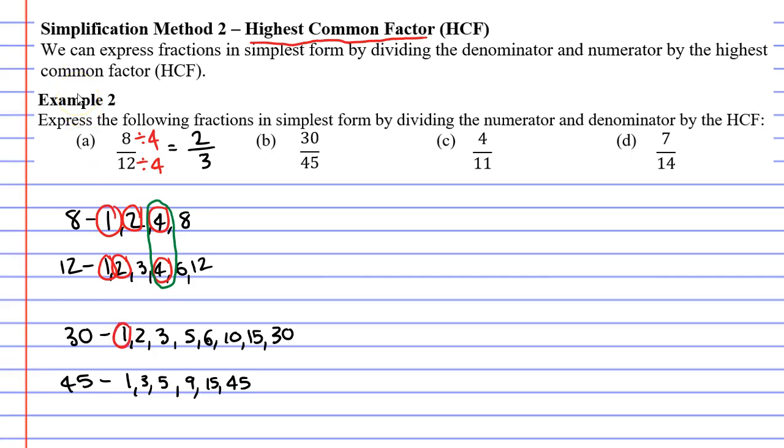So what factors do they have in common? They've got a common factor of 1, 3, 5, and also 15. We're looking for the highest common factor, which in this case is the 15. So we're going to divide our 2 numbers each by 15. 30 divided by 15 is 2, and 45 divided by 15 is 3.